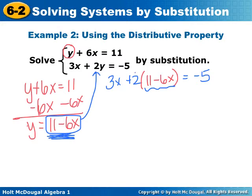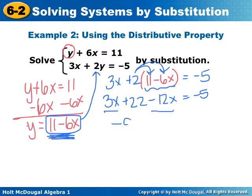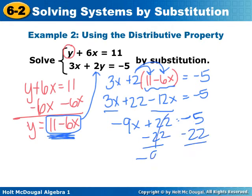Your next step when solving is to distribute and then solve for x. So I've got 3x plus 22 minus 12x is negative 5. Combine like terms. Negative 9x plus 22 is negative 5. Subtract 22, negative 9x is negative 27. So x is 3.